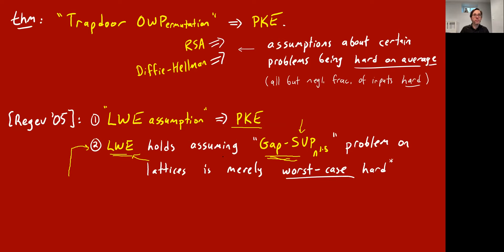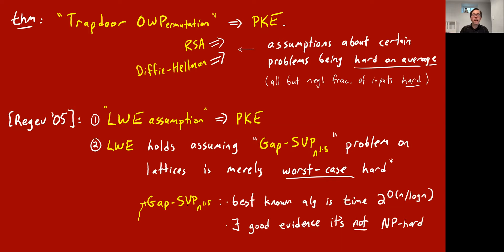This is indeed a seemingly hard problem — the best known algorithm for it runs in basically exponential time, 2 to the n over log n. People have thought about it, so it's not like it's a weird unknown problem. What's also intriguing is there's good evidence that it's not an NP-hard problem — it's one of these intermediate problems where it doesn't seem to be in polynomial time but also doesn't seem to be NP-hard. It's intriguing that this worst-case to average-case result did not hold for an NP-hard problem.